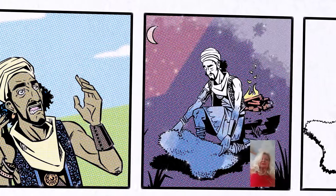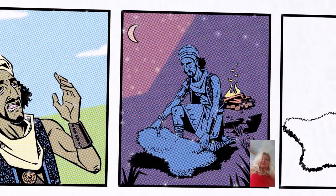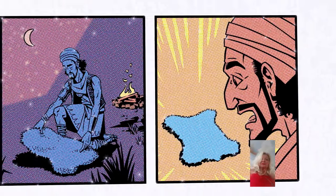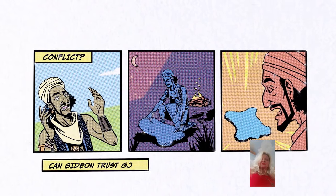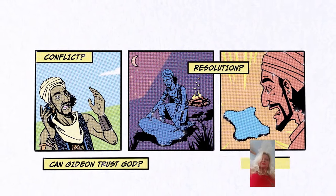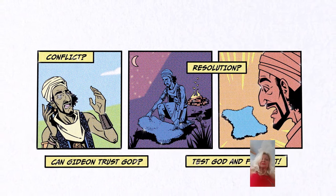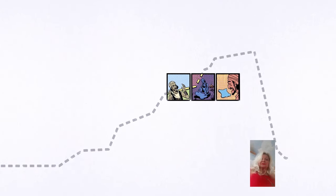Gideon lays a wool fleece on the ground and asks that in the morning the fleece be wet with dew but the ground totally dry, and God does it. Now if you look at this scene just by itself, what is the conflict? How can Gideon know if he'll succeed? And the resolution: test God, ask for a sign and find out. And that's how many people actually read this story — and it totally misses the point because it's ignoring the larger plot line.